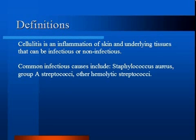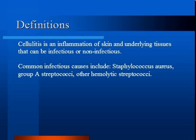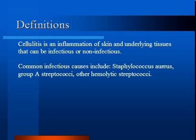Cellulitis is an inflammation of skin and underlying tissues that can be infectious or non-infectious. The infectious forms can be caused by various microorganisms. Common infectious causes include Staph aureus, Group A strep, and other hemolytic streptococci.